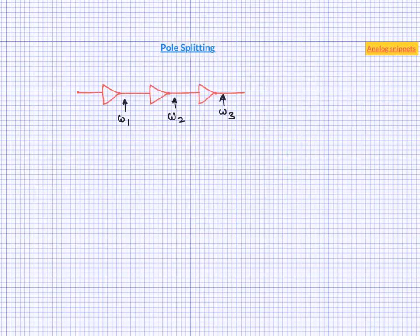In a multipole system, we tend to associate a pole with a node. For example, first pole at the first node, second pole at the second node and so on. But this one to one association with a pole with a node is only valid for very limited set of systems.